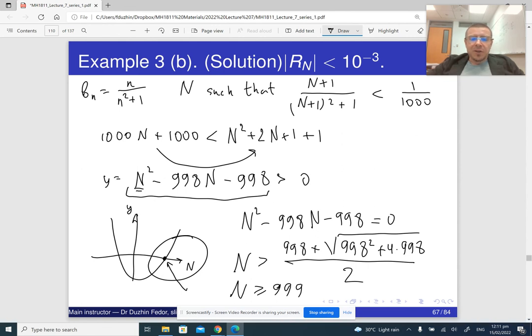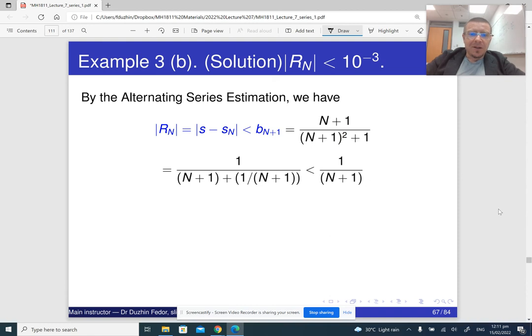Now, notice that we are, the question was to find some n. So actually, any n that is bigger than 999 is going to work. For example, if you use, say, R_1234, it is also going to work, because b with that index is still going to be smaller than what we are looking for.